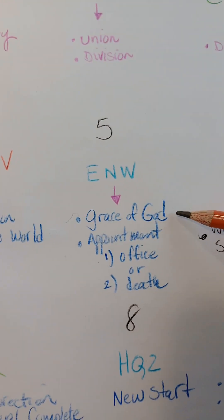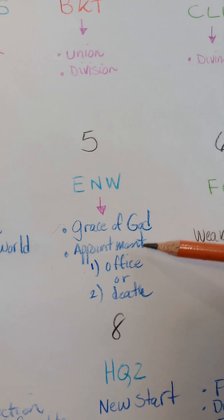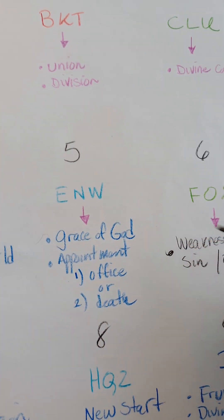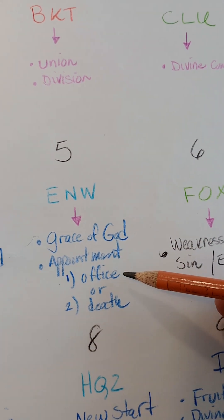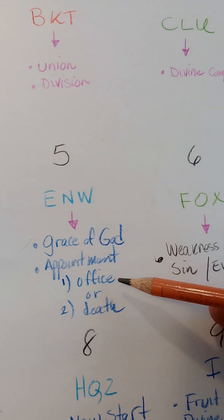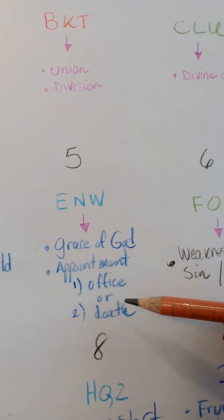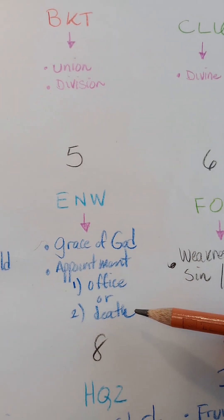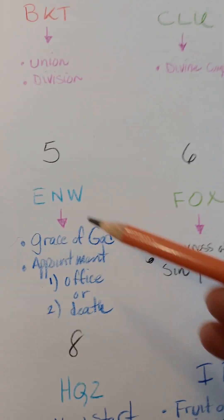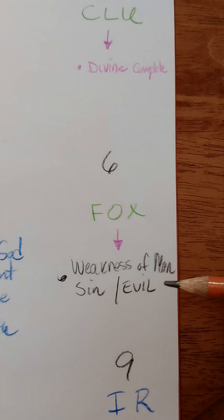Four is creation of the world. Five, grace of God, appointment. Appointment could be God could appoint you to an office, such as a pastor or prophet or king or president, or he can appoint death to you. Five has a lot of different meanings to it.